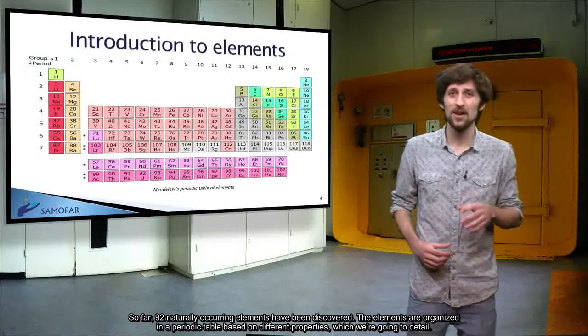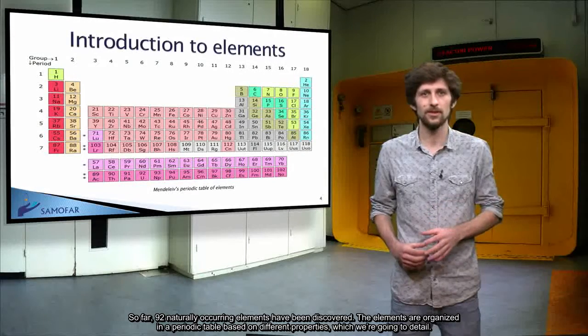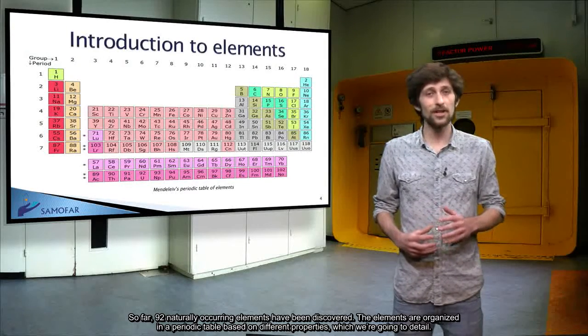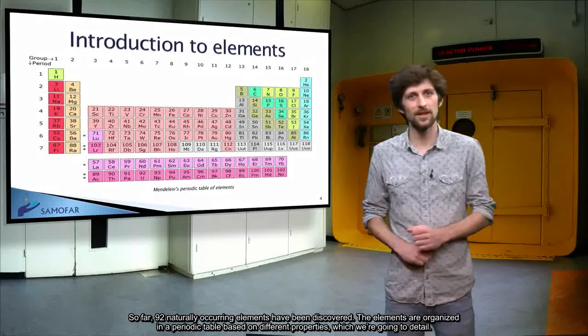So far, 92 naturally occurring elements have been discovered. The elements are organized in a periodic table based on different properties, which we are going to detail.